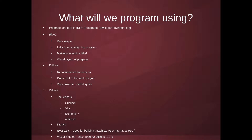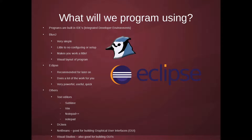Programs are built in IDEs — Integrated Developer Environments. IDEs can contain SDKs, Software Development Kits. The first one we're going to use is BlueJ. BlueJ is very simple. There's another one called Eclipse, but the reason I don't want to use Eclipse is because when you open it you have to configure it — there are a lot of buttons and options that are just clutter. I want to remove all that clutter and get you to focus on the code, because that is the meat and potatoes and by far the most important part.